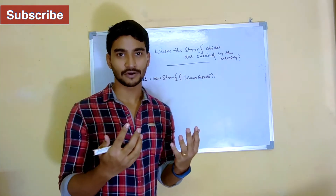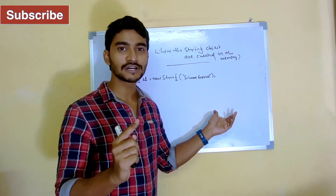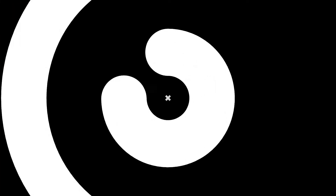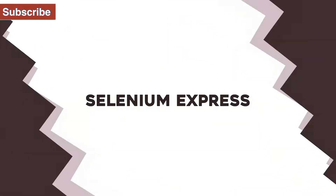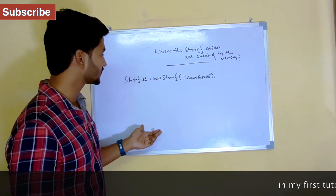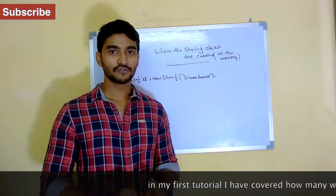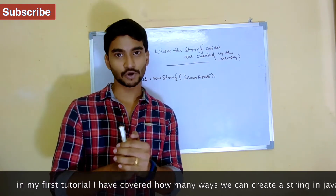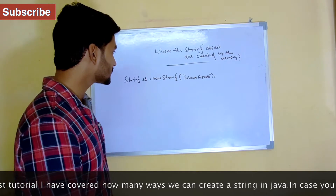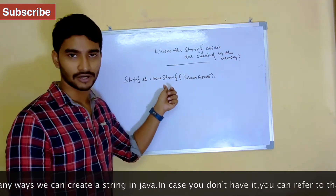We're not going to go in-depth here, just an overview of how things are happening so we can follow up in coming tutorials. First let's understand the basics. We can create a string object in two different ways: first by using the new keyword, and the second by using double quotes.